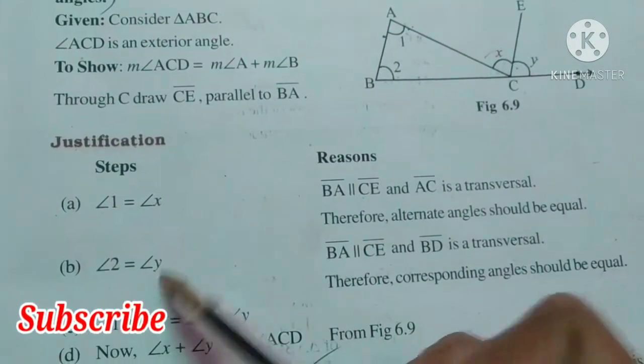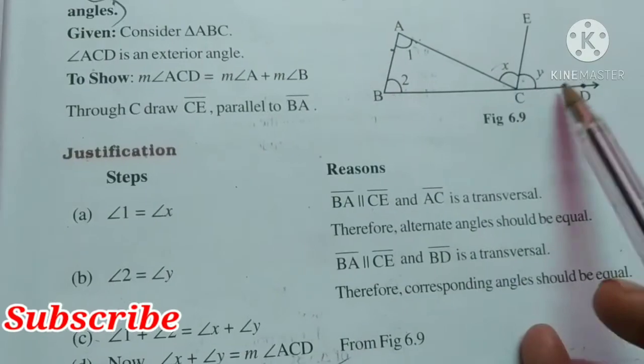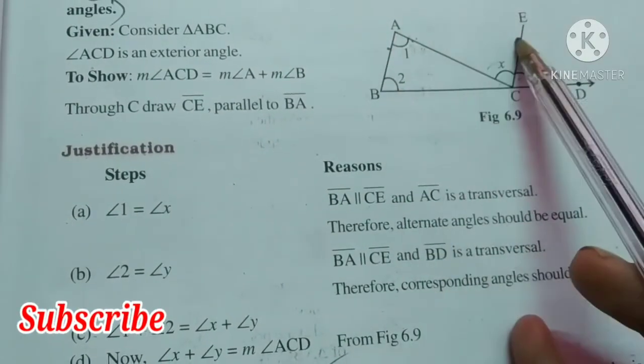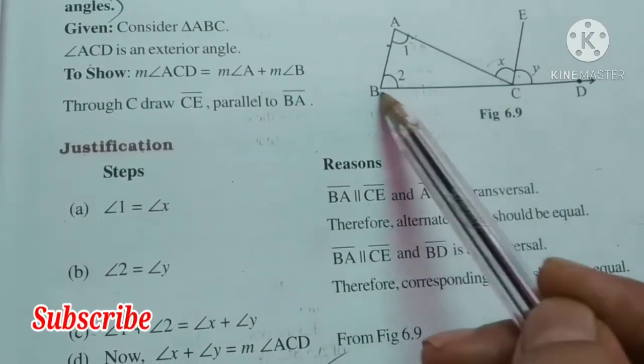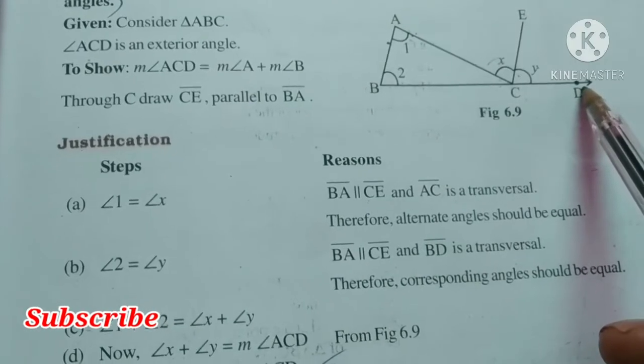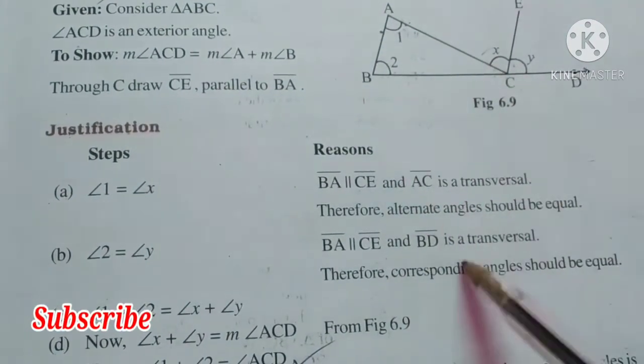Second, angle 2 is equal to angle Y. Here also BA is parallel to CE and BD is a transversal. Therefore, these are corresponding angles, so they are equal.